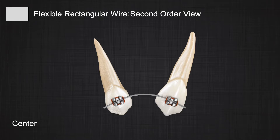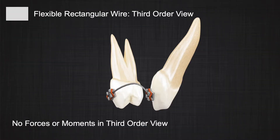But what happens if we put a piece of flexible wire between the two brackets? Because they are angulated, the wire receives a bend. Is this going to affect our system? Is it going to change the third-order angulation of the tooth? If the two adjacent teeth have equal angulation, when you put a rectangular wire there is no vertical force in your system, and therefore you wouldn't expect any change in the third-order view.